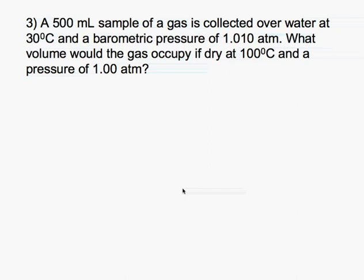Okay, our next problem says we have a 500 milliliter sample of gas collected over water at 30 degrees Celsius and a barometric pressure of 1.01 atmospheres. What volume would the gas occupy if dry at 100 degrees Celsius and a pressure of 1 atm?